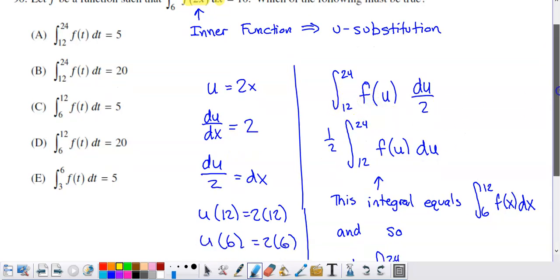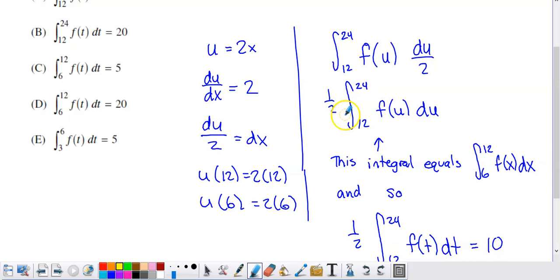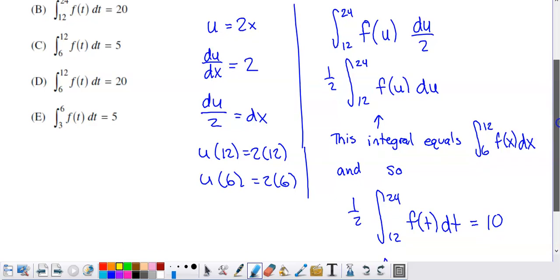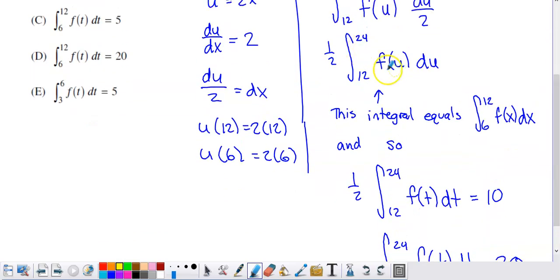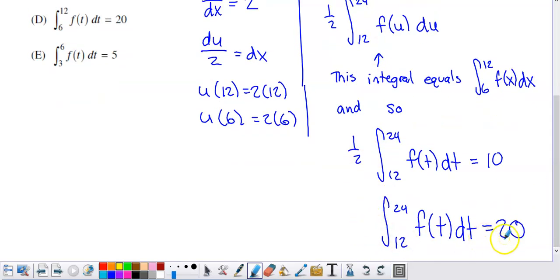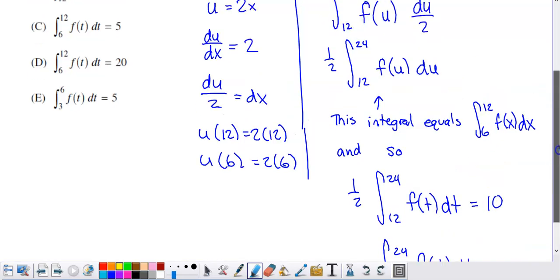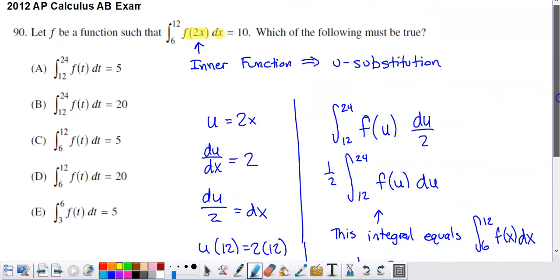So with a little bit further manipulation here, I can factor this 2 out in front of the integral. And so what I end up with is I end up with 1 half the integral from 12 to 24, f of u with respect to u. That's going to tell me that if I'm trying to solve this for an integral that goes from 12 to 24, I'm going to have to double what's on the other side of the given statement. So if you're wondering where I got this 10 from, that was from back here.